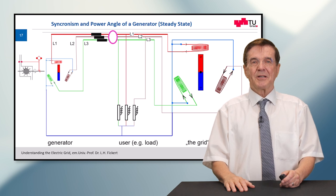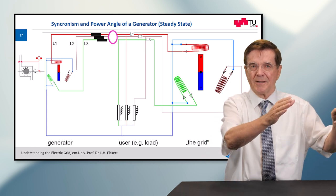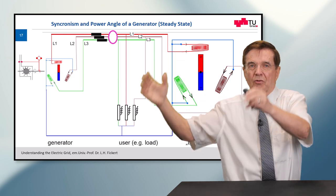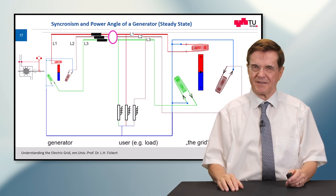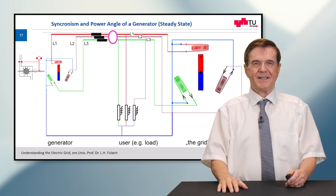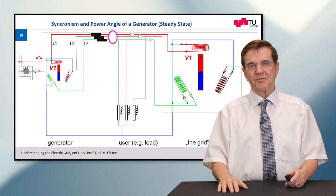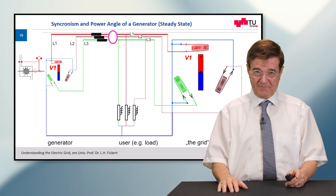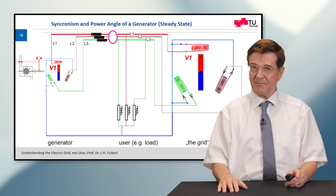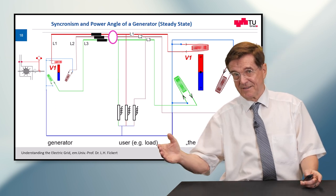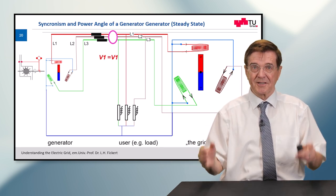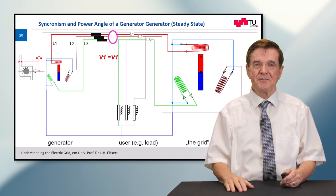So we concentrate on the transition point between the power plant, the generator, and the big grid, which is understood as a big large machine that is constantly running. Now as we assumed, both voltage sources behave the same way. So the voltage at the left side is exactly the same as on the right side. This means the voltage difference across this coupling point is zero.